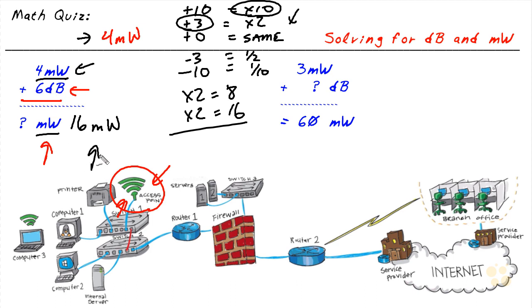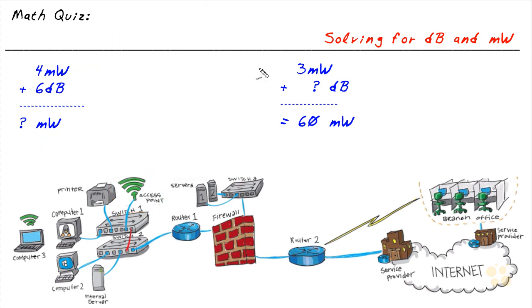So if we came to our boss and said, the new transmit power would be 16 milliwatts, our boss would smile and say, great job! The next question our boss might ask is, what if our access point is currently operating at 3 milliwatts of transmit power, and we're going to modify the settings to change it to 60 milliwatts of transmit power? What is the actual gain in decibel if we make that change?